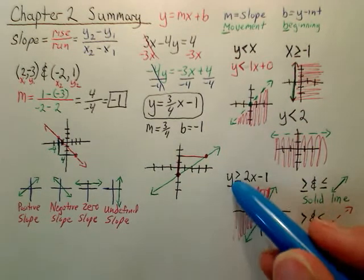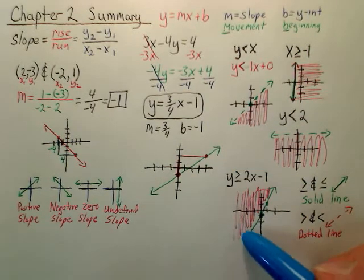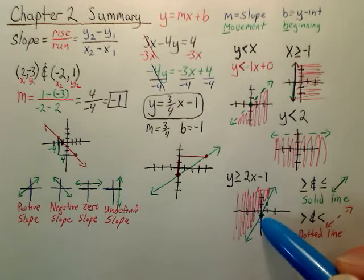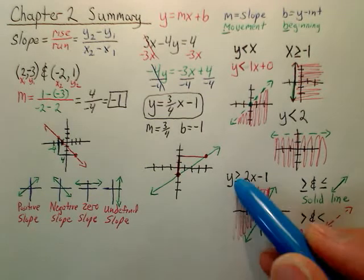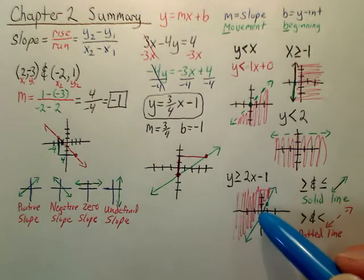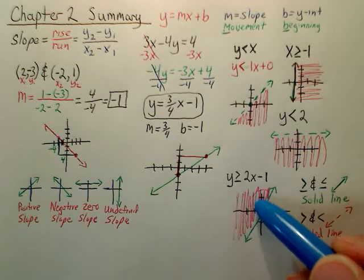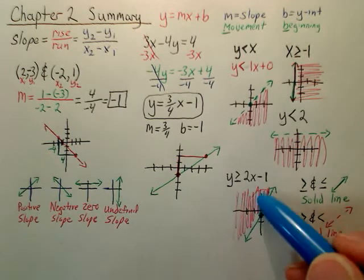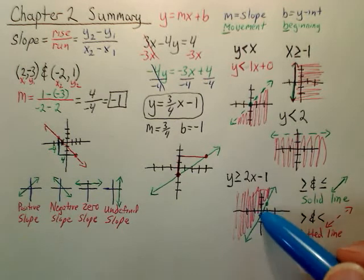If we're doing this one right here, it's or equal to, so it's a solid line. It begins at -1. Slope is 2, so we went up 2 over 1. Solid line. It's greater than or equal to, so from the graph you go up. You go up, shade that side. If it was less than, you go down, shade down here.